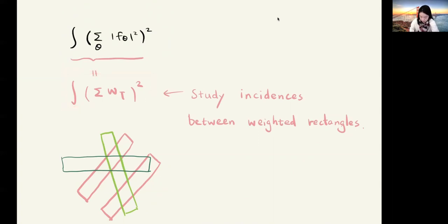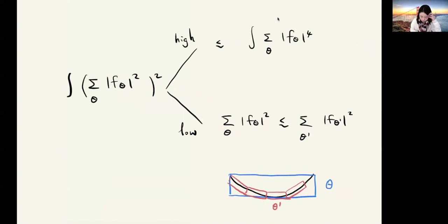This quantity studies the incidences between those weighted rectangles. If those rectangles overlap a lot, then this quantity will be large. But if they don't overlap so much, this quantity will be small. Then we look at the frequency of this square function. If the square function is dominated by high frequency, then we will be able to bound the integral of the square function by sum over the little L^4 sum of L^4 norm of f_theta. This is pretty good because in general we won't be able to get a little L^4 sum.